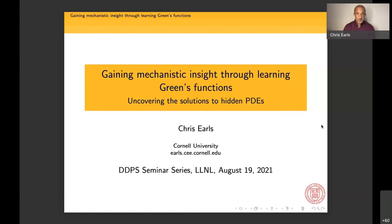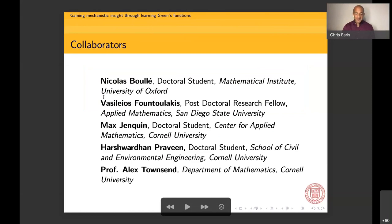And as with any research, I have a series of collaborators who I have to acknowledge and thank. And the first part of the talk related to reduced order models is conducted with a former PhD student of mine who is now a postdoc at San Diego State University, Vasilios Fotopoulos. And then the second part of the talk, the empirical Green's function work is carried out with one of my doctoral students at the Center for Applied Mathematics, Max Jenquin, and the very talented Harsh Praveen, a doctoral student of mine at the School of Civil and Environmental Engineering. And then the last third of the talk is the newest work and it's a collaboration between a very talented doctoral student in mathematics at Oxford, Nicolas Boulle, and my good friend in the math department at Cornell, Professor Alex Townsend.